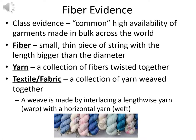A fiber is a small, thin piece of string with its length bigger than its diameter — longer than it is wide. Yarn is a collection of fibers twisted together, and a textile or fabric is a collection of yarn woven together. That's what we typically deal with, but they're composed of yarns, which are composed of fibers. A weave is made by interlacing a lengthwise yarn called the warp with a horizontal yarn called the weft.